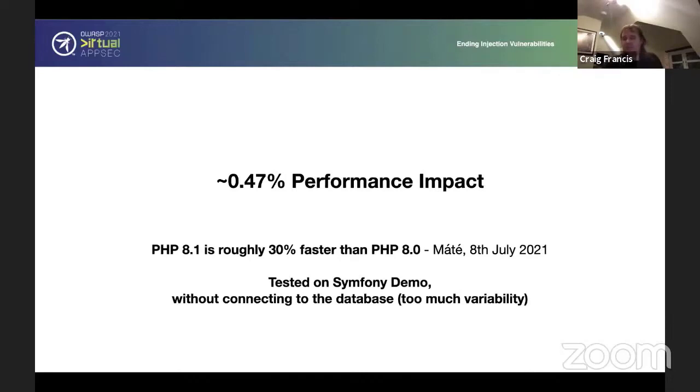And the other advantage of this is developers would be right as they write the code. So you talk about people pushing left for their development practices. IDEs, once they know about this type, would be able to sort of go, oh, they can highlight it as you type the keys. Or just have it trigger as soon as they run that code for the very first time. In terms of performance impact, we've got a 0.47% performance impact. And that was kind of, we were trying to be pessimistic on that one. PHP is roughly 30% faster anyway. So it's dwarfs by that. And also, we're using the Symfony demo, which is quite complex. And we couldn't even get it to connect to the database because by connecting to the database introduced too much variability. So the real world performance impact is going to be less than that.